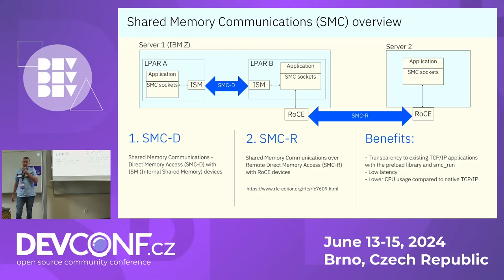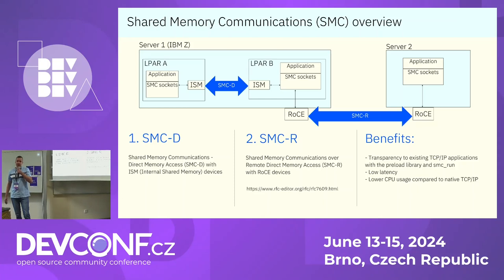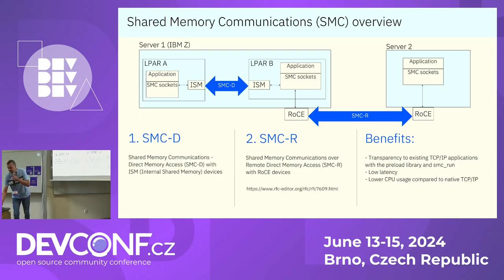There are two types of SMC: SMC Direct Memory Access or SMCD, which uses an internal shared memory device and is used for communications within one IBM Z physical server; and SMC over RDMA or SMCR, which uses RoCE adapters for communication between different physical servers. Currently in Storage Scale, only SMCD is supported.